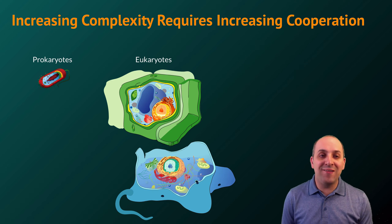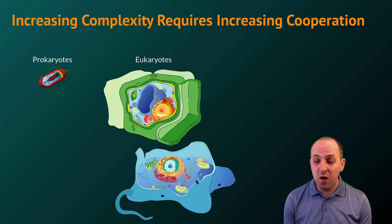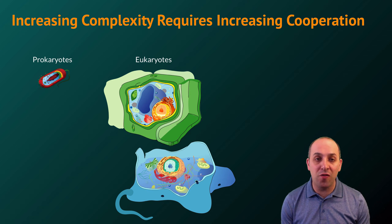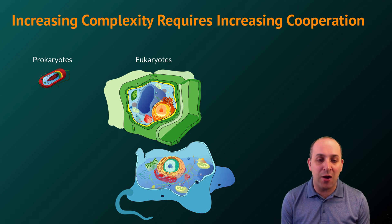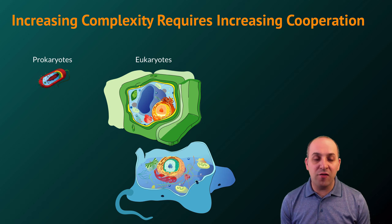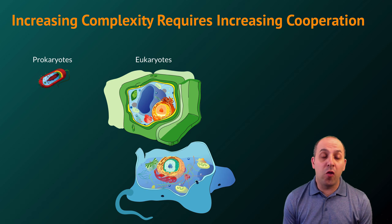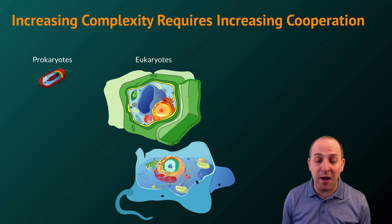We've actually already seen this when we considered the relationships between prokaryotic and eukaryotic cells. Eukaryotic cells are much larger and more complex than prokaryotic cells, and the reason for this is because of the increased cooperation that results from the increased compartmentalization we see in eukaryotic cells. Because eukaryotic cells have more parts, those parts can interact in ways that increase the overall cooperation of the organism, leading to the larger size of the cells and, of course, multicellularity in several of the eukaryotic lineages.